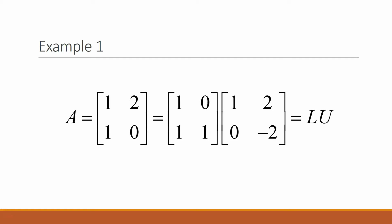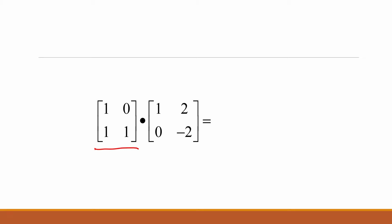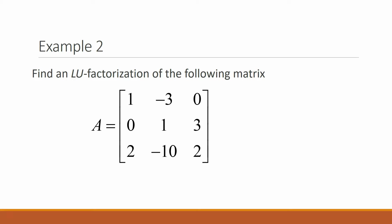In Example 1, we are given a matrix A which equals [1, 2; 1, 0], which can be split into two separate matrices — one upper triangular and one lower triangular. L represents the lower triangular matrix and U represents the upper triangular matrix. We can show that L times U equals A by computing a simple matrix multiplication between L and U, and we can see that the product of the upper and lower triangular matrices equals A.